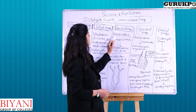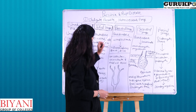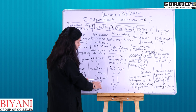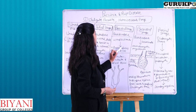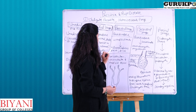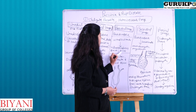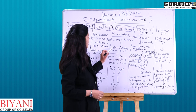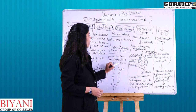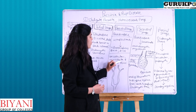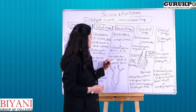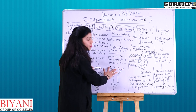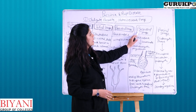Next is the basidial stage. In the basidial stage, four basidiospores are formed from the four haploid nuclei — two of positive strain type and two of negative strain type. Basidiospores are unicellular, uninucleate, and haploid structures.